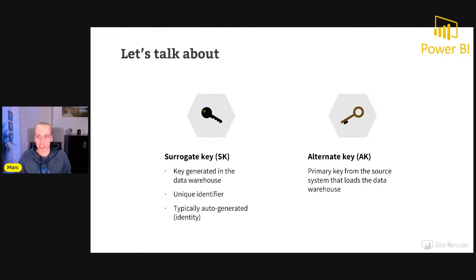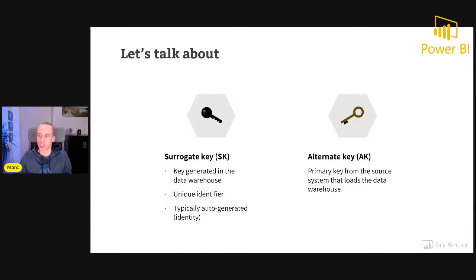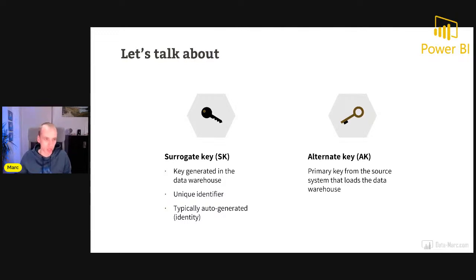The surrogate key is a key generated in a data warehouse or data platform only for reporting purposes — it's typically an auto-generated identity. The alternate key is the primary key for a dimensional value given from the source system, such as a CRM or sales system. The alternate key is the key value loaded from the source to the data warehouse.